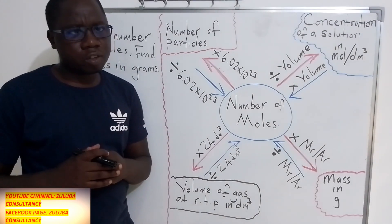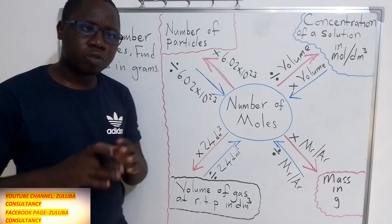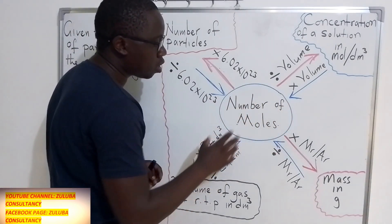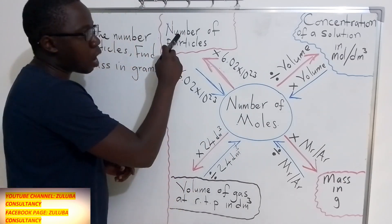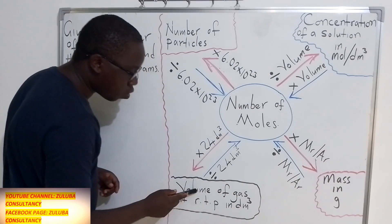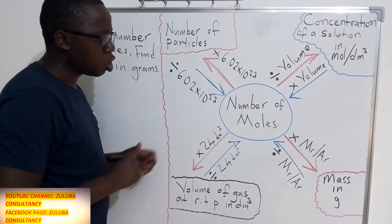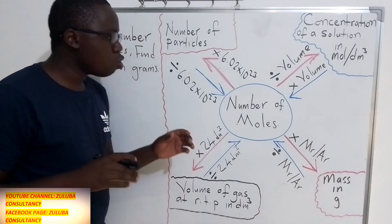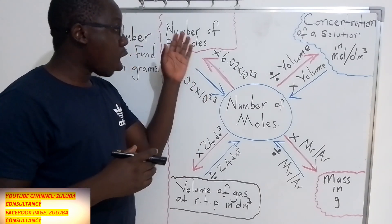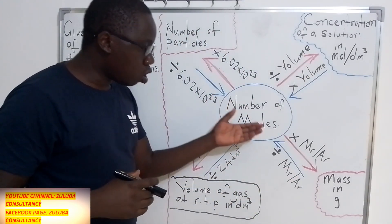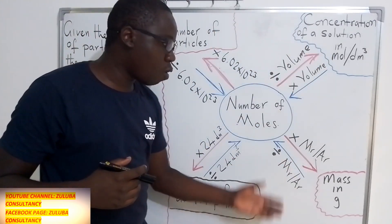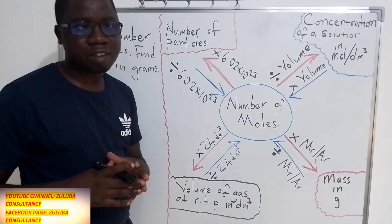The main objective of this video is to help you see how the number of moles becomes the link when it comes to the number of particles, the concentration, the mass, and the volume in chemistry. We'll see how you can convert numbers from one of the four to the number of moles, and thereafter change to any of the three others you may be asked about.